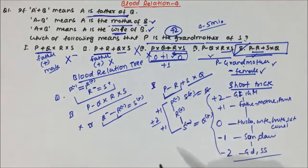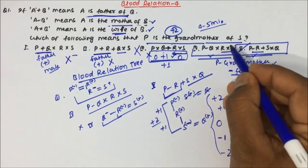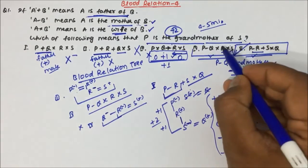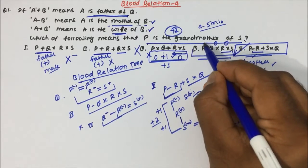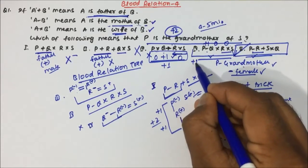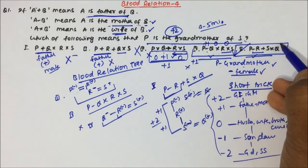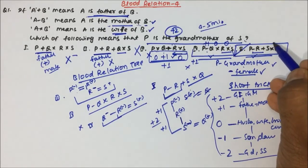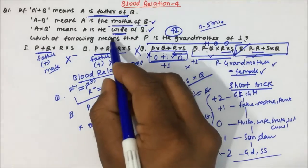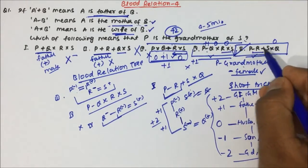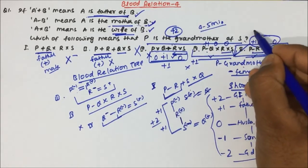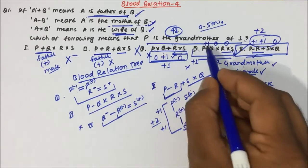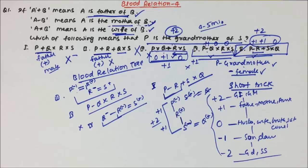Checking option three: r × s is wife — gap zero; q + r is father — gap plus one; p × q is wife — gap zero. Total gap between p and s is plus one, so option three is not the answer. Option four: r × s is wife — gap zero; q × r is wife — gap zero; p - r is mother — gap plus one. Total is plus one, also not the answer. Option five: s × q is wife — gap zero; r + s is father — gap one; p - r is mother — gap one. Total generation gap is two, which is what we want. So option five is the correct answer.